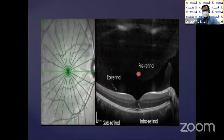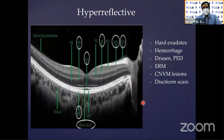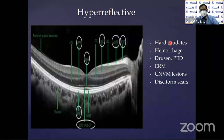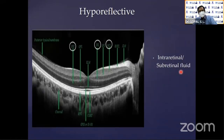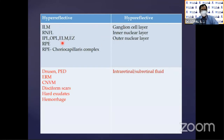We need to carefully look at what is happening in the pre-retinal space, the epiretinal space, the surface of the retina, the intra-retinal, and the sub-retinal. Intra-retinal can be divided into outer and inner retinal. We should know what is hyper-reflective and hypo-reflective. Hyper-reflective structures include hard exudates, hemorrhages, drusen, epiretinal membrane, choroidal neovascular membranes, and disciform scars. Hypo-reflective abnormal structures include intra-retinal and sub-retinal fluid.